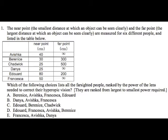Which of the following choices lists all the farsighted people ranked by the power of the lens needed to correct their hyperopic vision? They are ranked from the largest to smallest power required, and then there's a list of various names. So the way to do this is first figure out from this list which of the people are farsighted, and then rank them based on the power of the lens needed to correct their farsightedness — the same thing as hyperopia — from the largest power lens needed to the smallest.